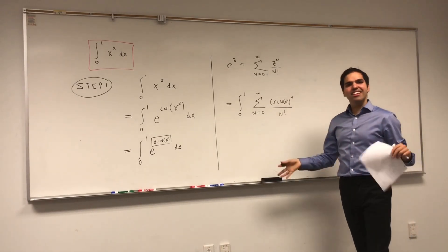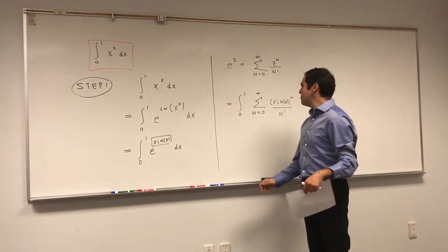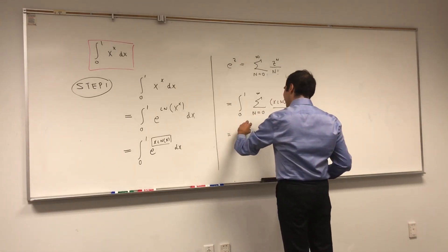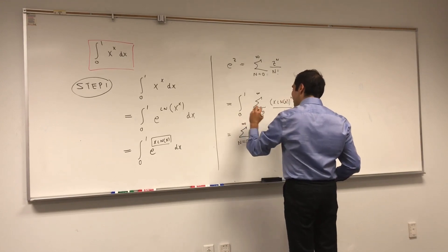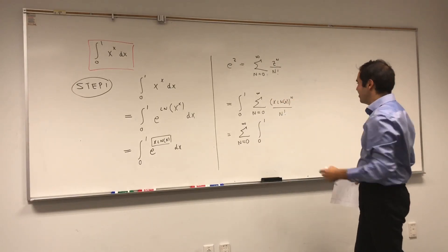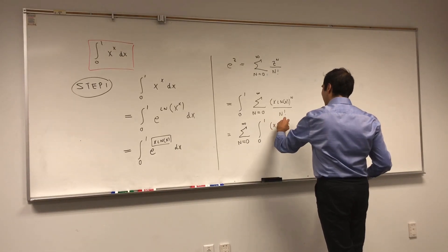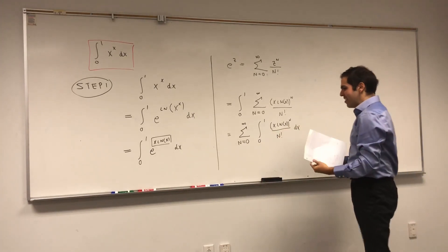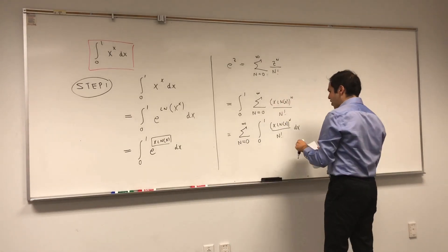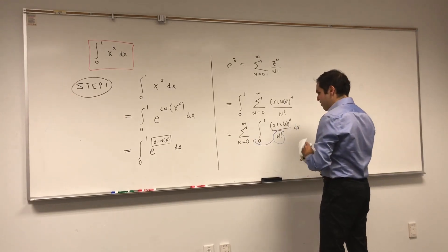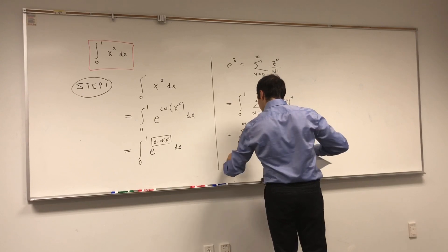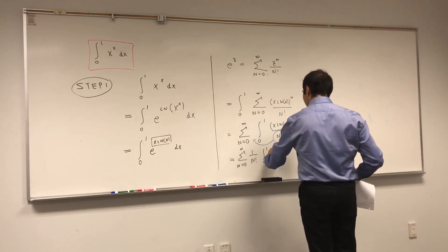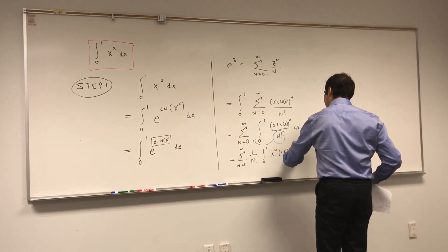Now I'm going to do something that's very nasty, and that's usually illegal, but I'm feeling like a bad boy today. I'm going to interchange this integral and this sum. In analysis you don't always do this, but in this case it's justified by convergence. So let's interchange those and get the sum from n equals zero to infinity of one over n factorial times the integral from zero to one of x ln of x to the n dx.